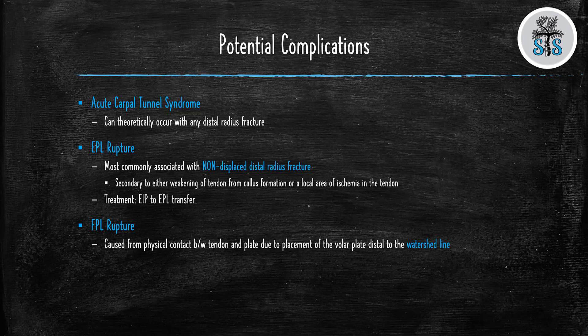Lastly, some potential complications. Acute carpal tunnel syndrome can theoretically occur with any distal radius fracture, so look out for numbness or tingling in the median nerve distribution that does not go away after the first 24 to 48 hours after closed reduction and splinting or casting. EPL ruptures are most commonly associated with non-displaced distal radius fractures, secondary to weakening of the tendon, callus formation, or local ischemia — treat with an EIP to EPL transfer. FPL rupture is caused by contact between the tendon and plate due to placement of the volar plate distal to the watershed line.